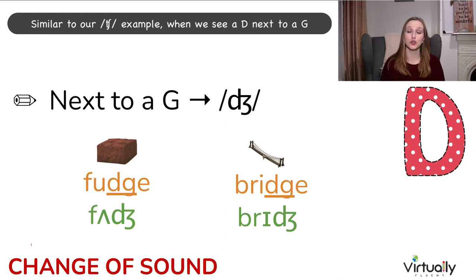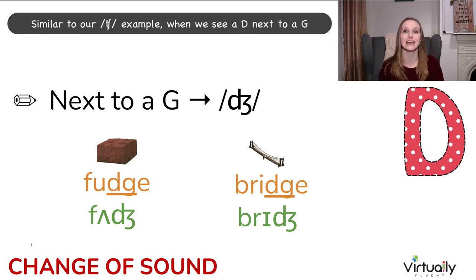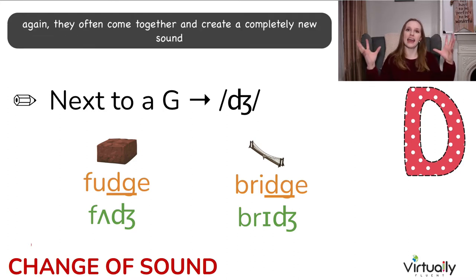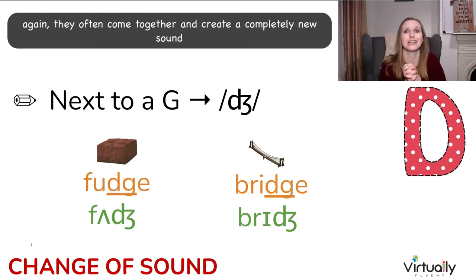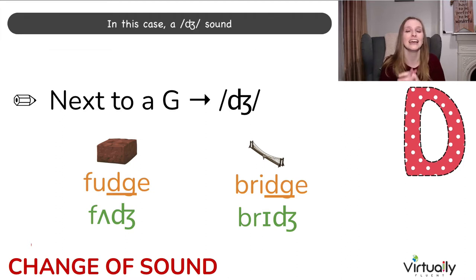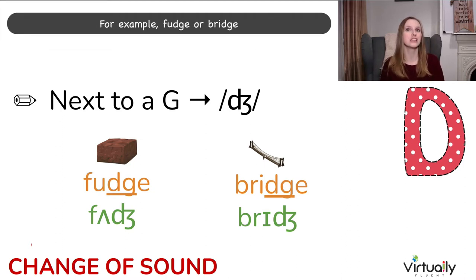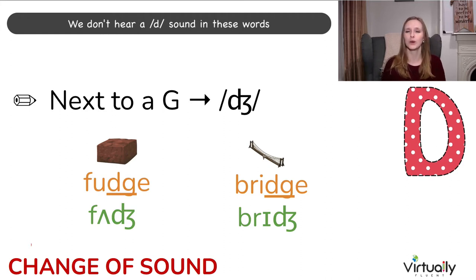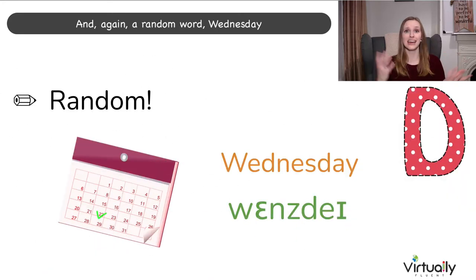Similar to our CH example, when we see a D next to a G, they often come together and create a completely new sound — in this case, a J sound. For example: fudge or bridge. We don't hear a D sound in these words. And again, a random word: Wednesday.